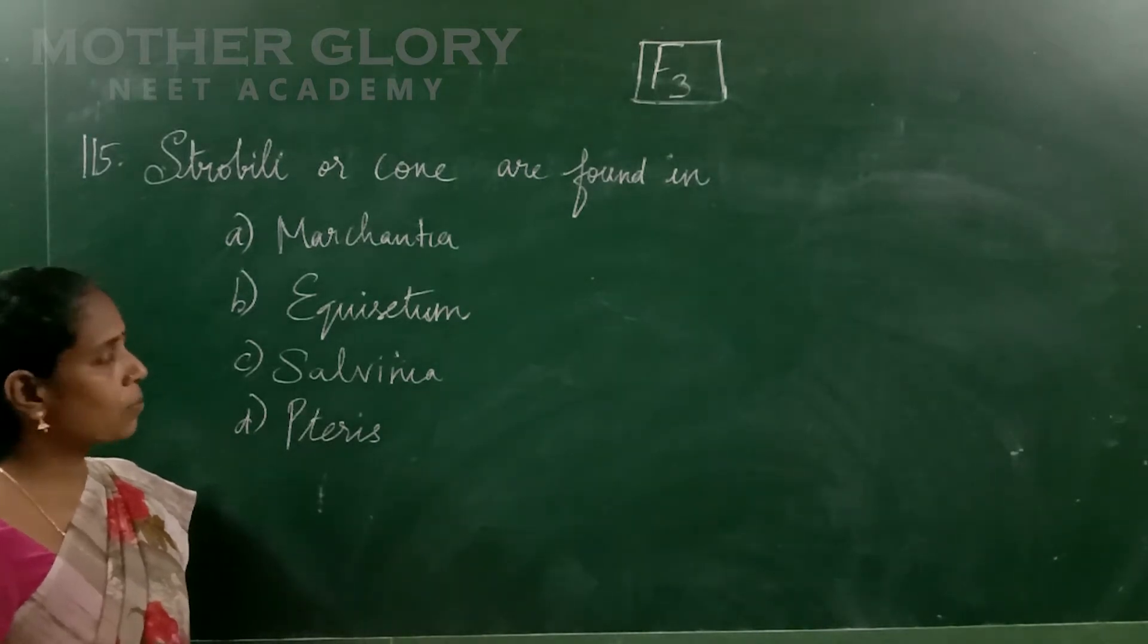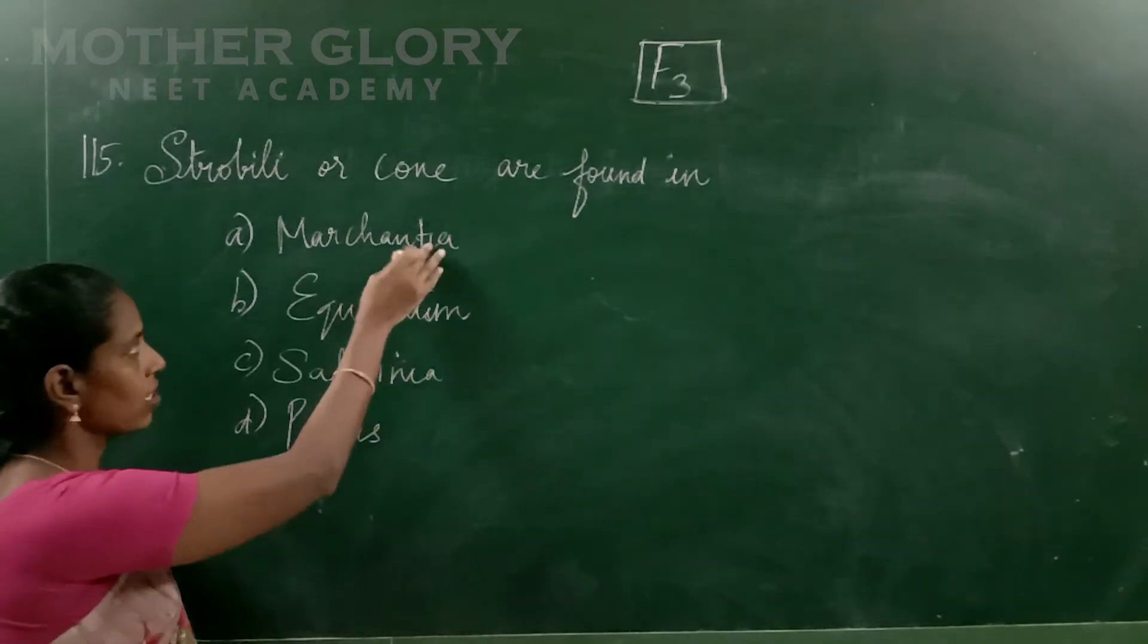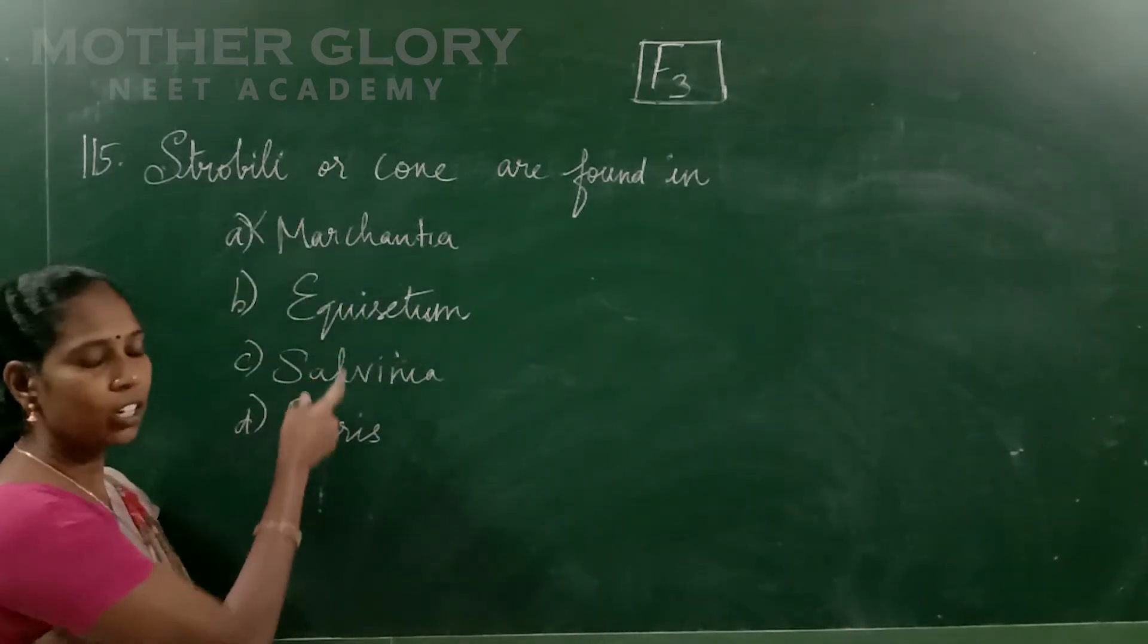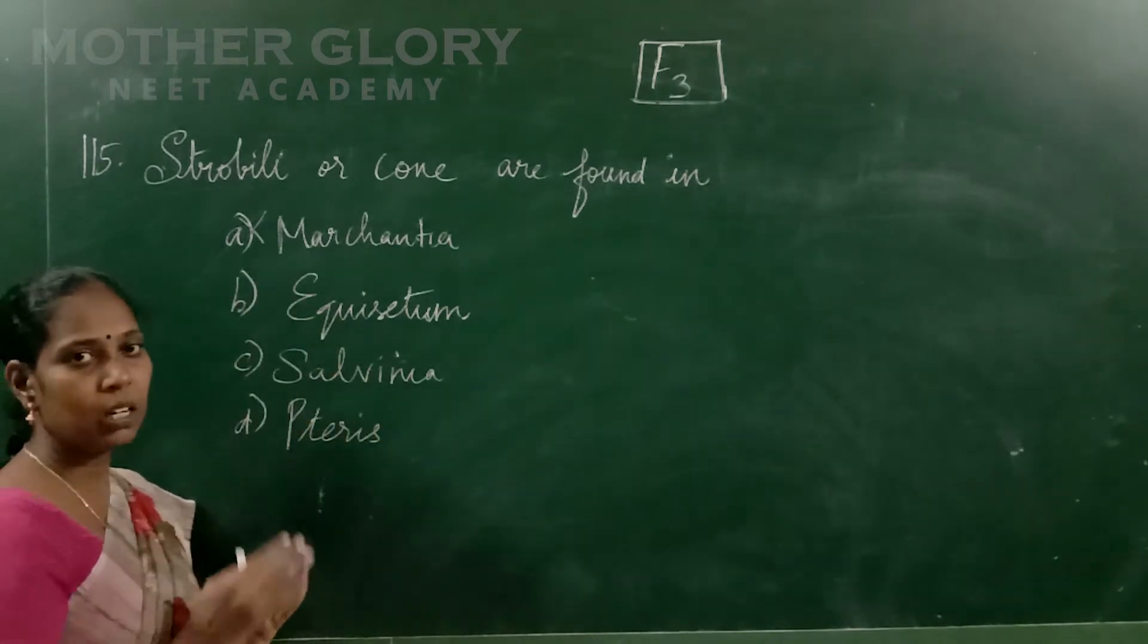The options paragraph - option A, Marchantia. Marchantia is found in bryophytes, so this is not valid. But according to the NCERT, that question will say strobili cannot be found in Marchantia.